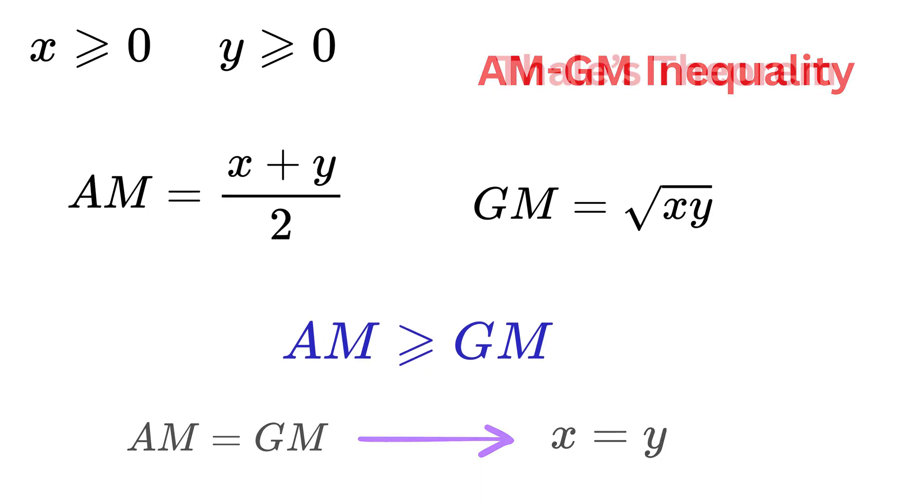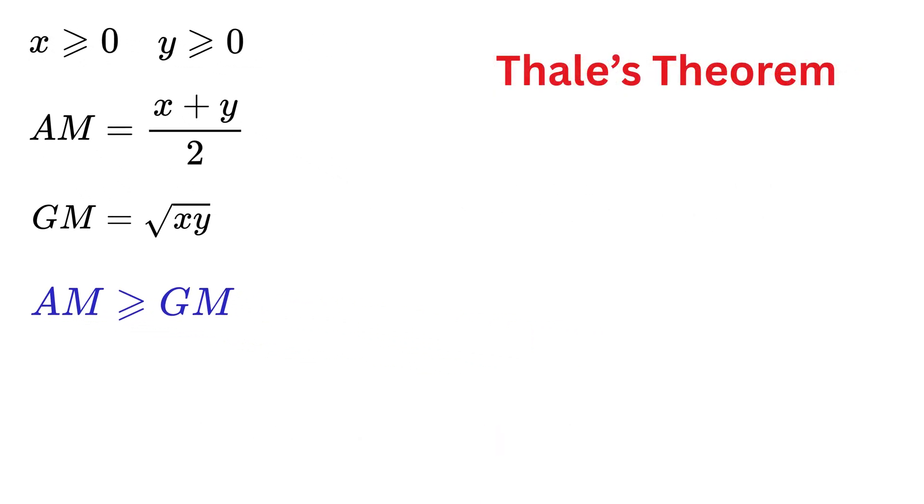Now there is also a theorem in math called Thales' theorem, in which if you draw a triangle inside a circle, such that one side of the triangle is the diameter of the circle, then the angle opposite to this side will always be a right angle, or 90 degrees.